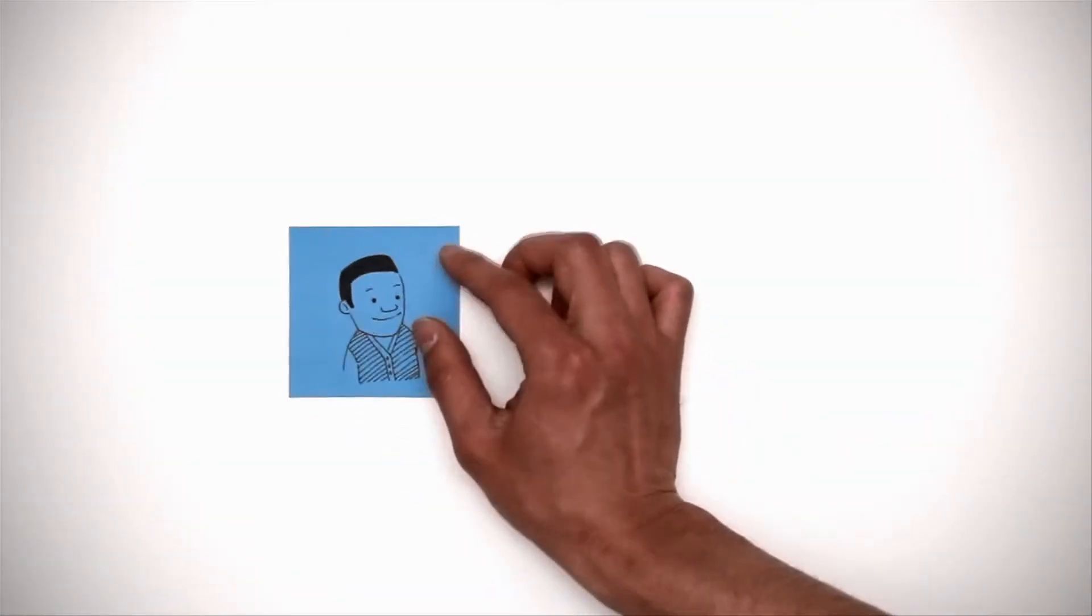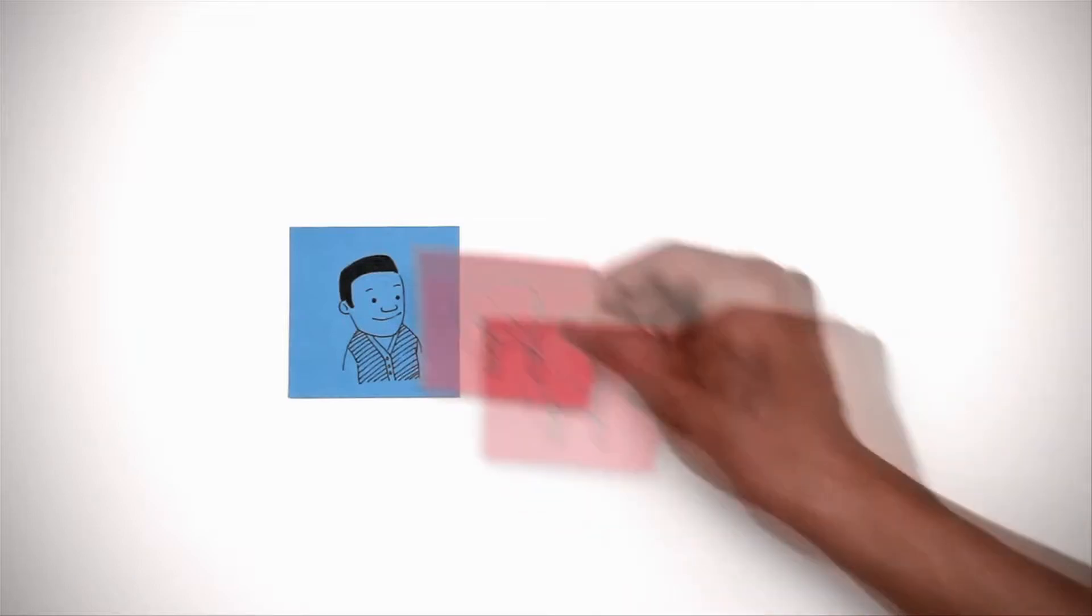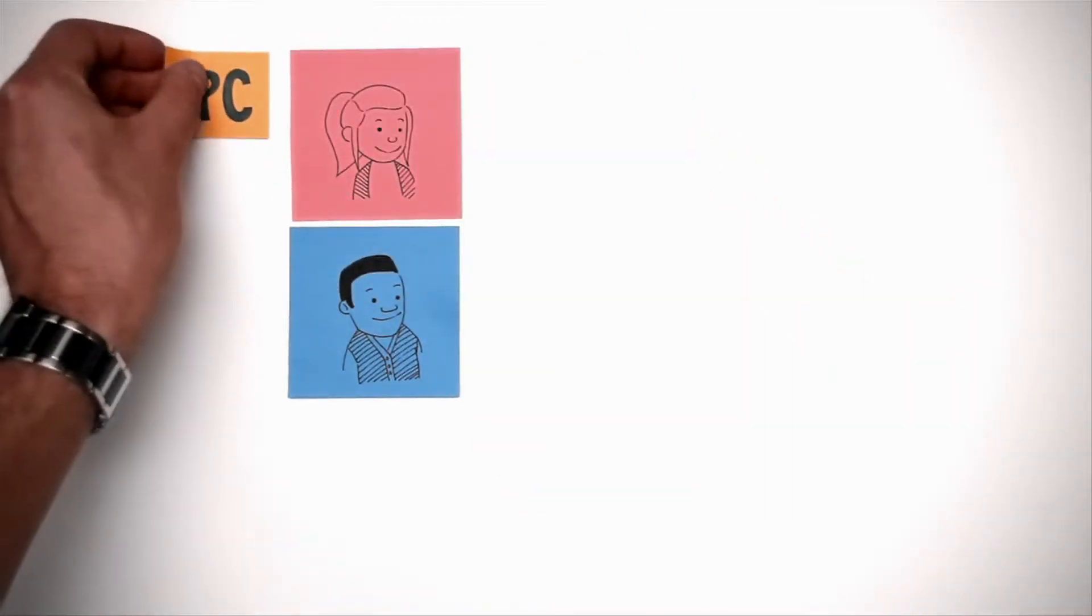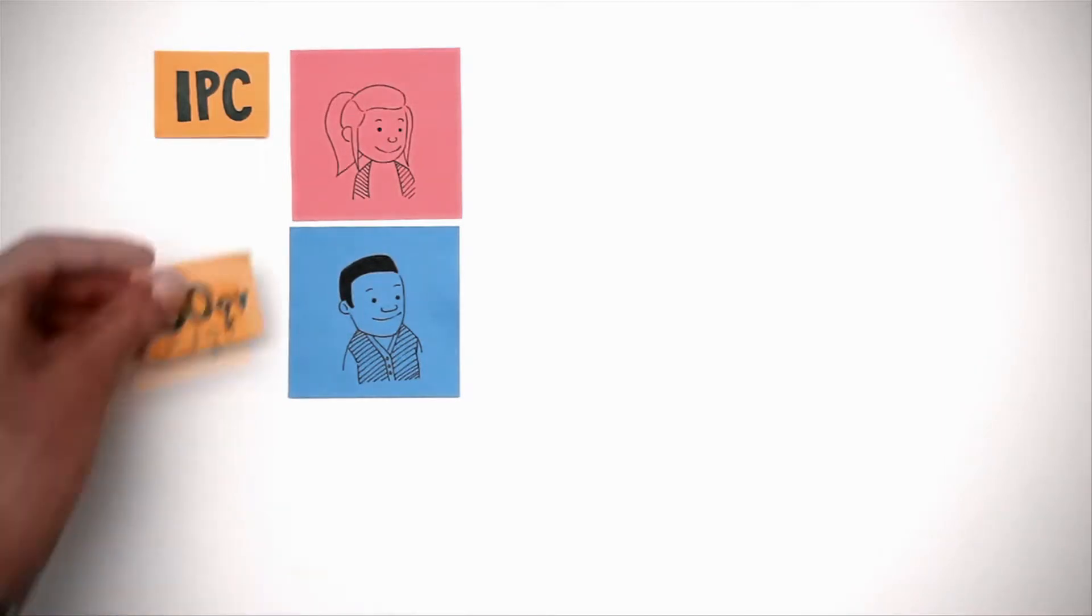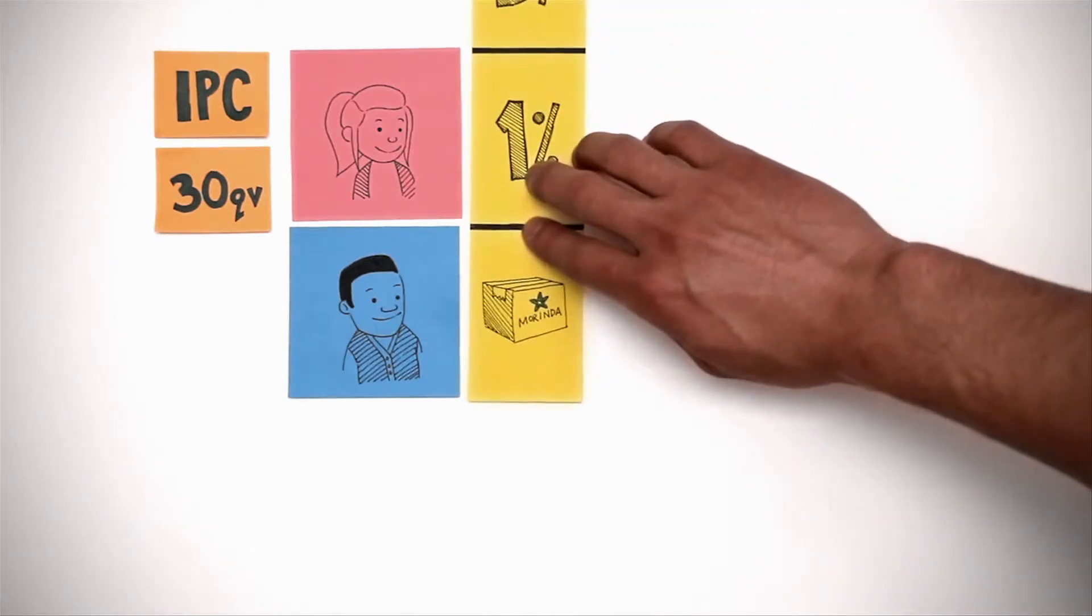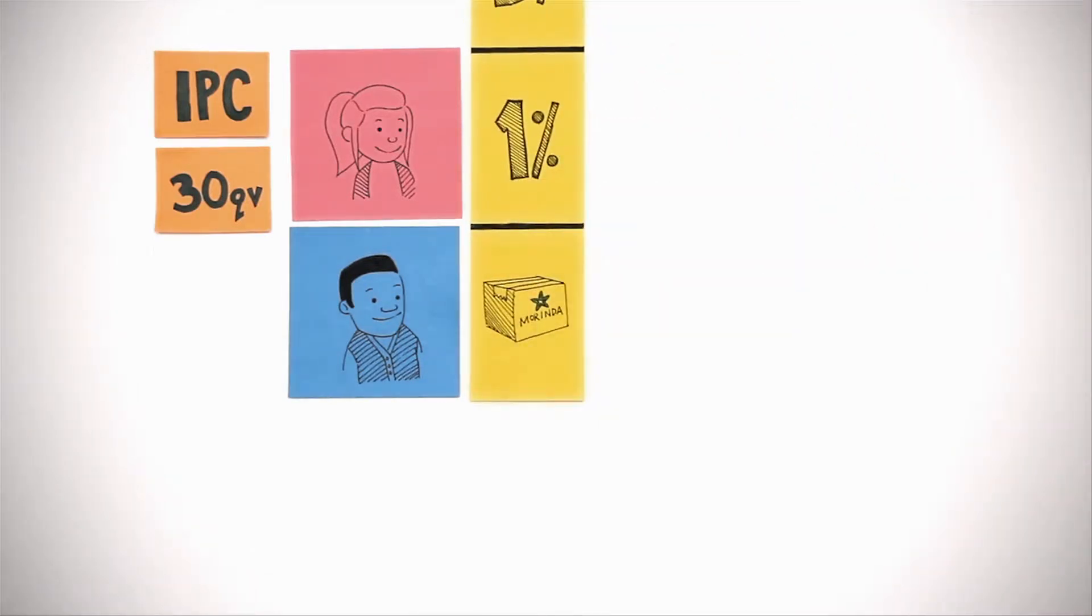Meet Dan. He's the key to Lucy's success. I am? See, Dan's an IPC in Lucy's organization. Because Lucy is an active IPC who purchases at least 30 QV in product every month, whenever Dan makes a purchase, Lucy gets paid a 1% commission.